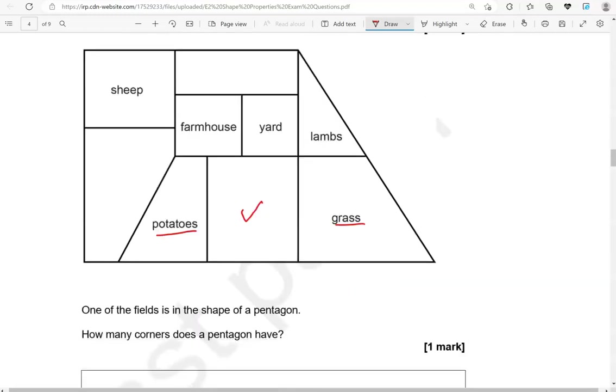One of the fields is in the shape of a pentagon. How many corners does the pentagon have? This is the field that is in the shape of a pentagon, and it has 5 corners: 1, 2, 3, 4, 5.